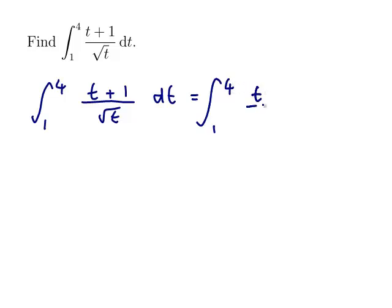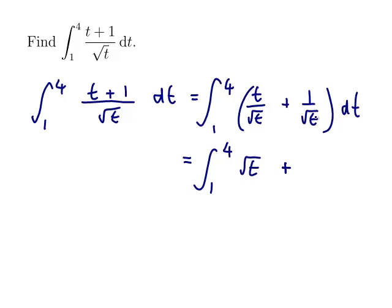Right, so we've got t over root t plus 1 over root t dt. So it's still integral from 1 to 4. t over root t is root t, and 1 over root t is t to the minus 1 half, and root t is t to the plus 1 half.